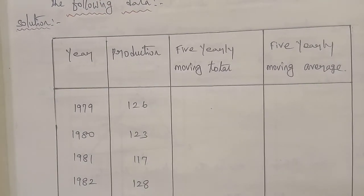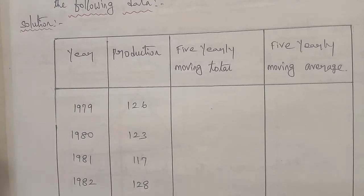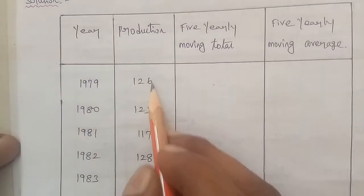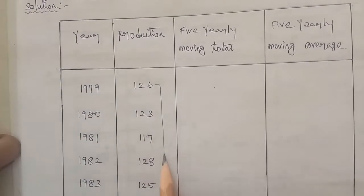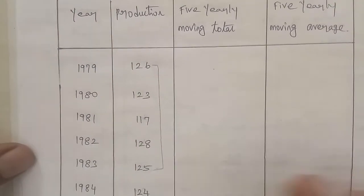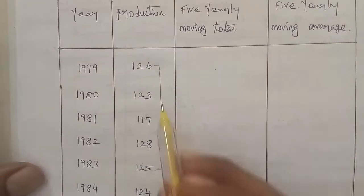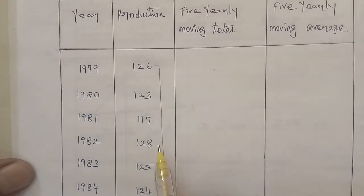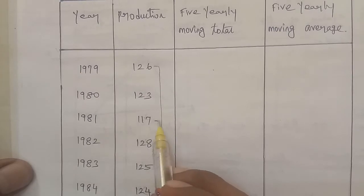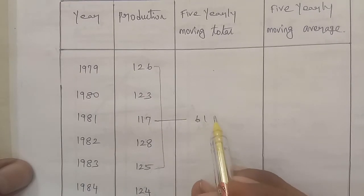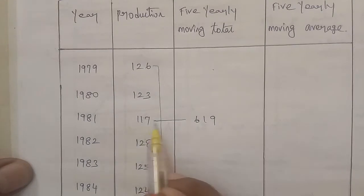For the first entry, take the first 5 numbers — 1, 2, 3, 4, 5. Select those 5 numbers, add them together, and you will get 619. Enter this in the middle value row of the first 5 numbers.